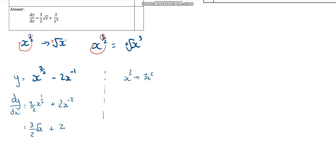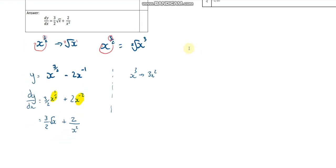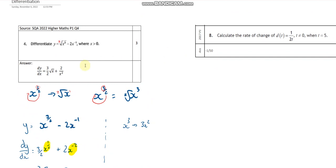To finish off we write it nicely: three over two X to the half — you could write that as three root X over two. Then when I change the sign I cross the line — my two stays where it is and the X squared goes on the bottom. An important point: the X is separate from the coefficient, so the root doesn't cover the three over two, and with a negative, the two does not go underneath with me.